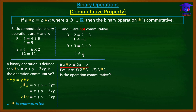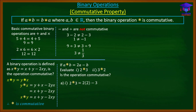Next example: if a★b = 2a − b, evaluate (i) 2★3 and (ii) 3★2, then determine whether the operation is commutative. For part (i), 2★3: a is two and b is three, so we get two times two minus three, which gives one.